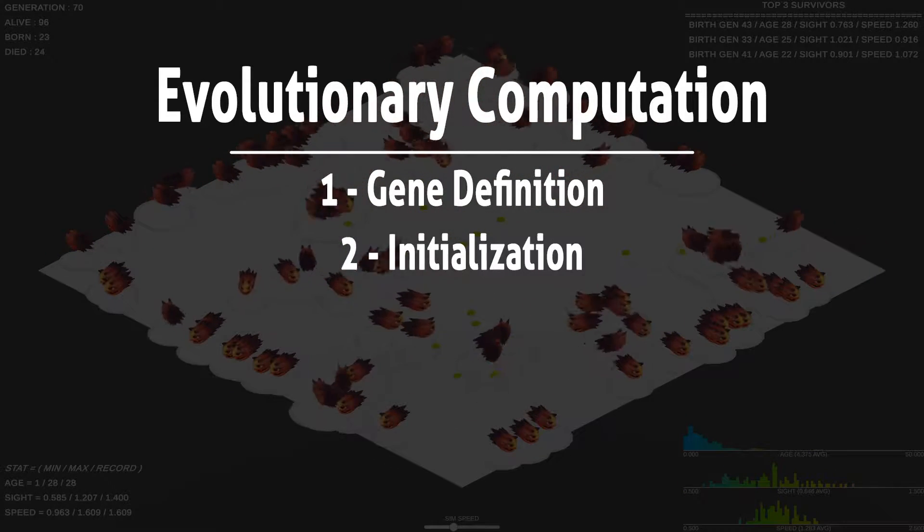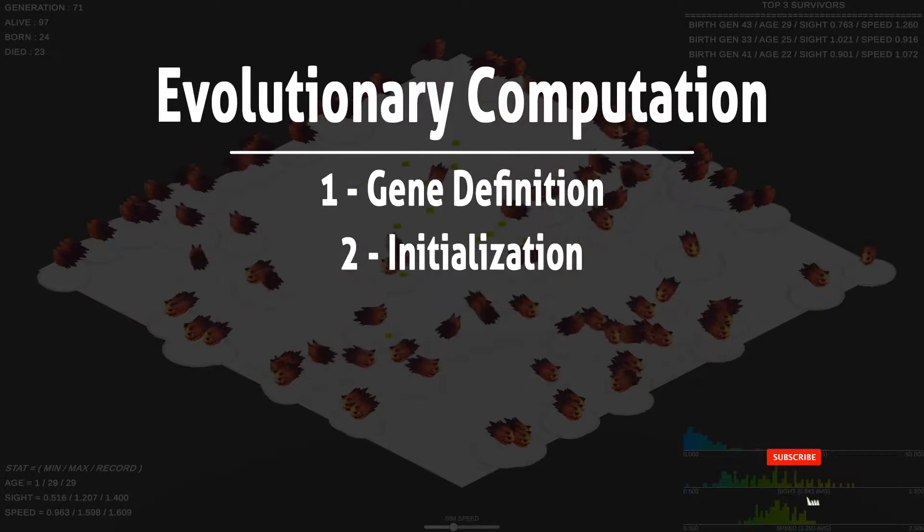Initialization: this is the starting population, usually with random genes.